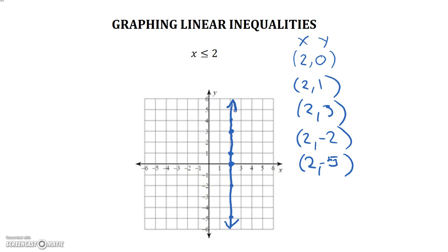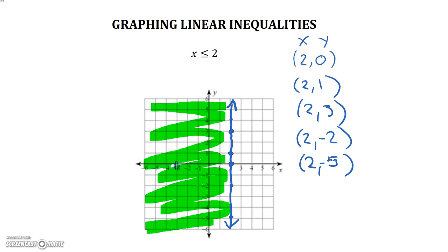Now our last part is deciding where to shade. Now there's two different ways that I've found we'd like to remember this. We can either just think about it logically. x is less than or equal to 2, which means that we're going to shade everything that's less than or equal to 2. Because all these numbers here are less than 2.